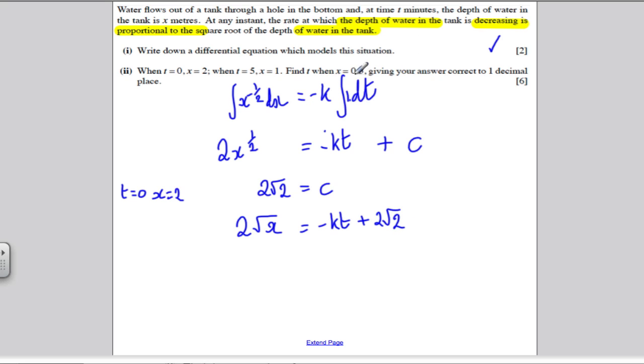And then let's use the other one. It says when t is 5, x is 1. So t is 5, x is 1. Sub that in. 2 times the square root of 1 is 2. We put in t is 5, we get minus 5k plus 2 root 2.